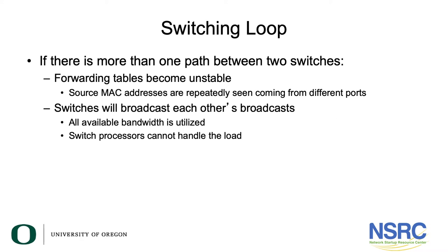If there's more than one path between two switches, the first problem is your forwarding tables are going to become unstable. Switches work by recording which port they saw a source MAC address coming from, so that if they see a packet going to that destination they know which port to send it out through. But if you have a loop, a particular packet from a particular source could come from more than one port, and the switch has to keep updating its MAC address table. If there are lots of devices, the switch is spending a lot of time updating MAC address tables.